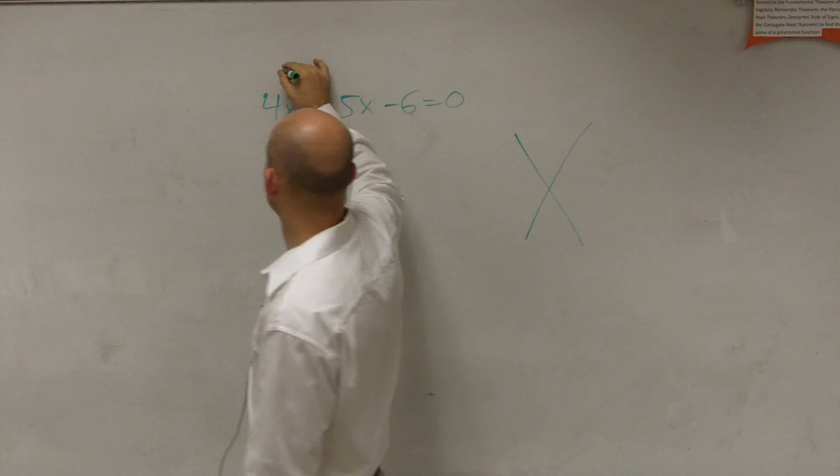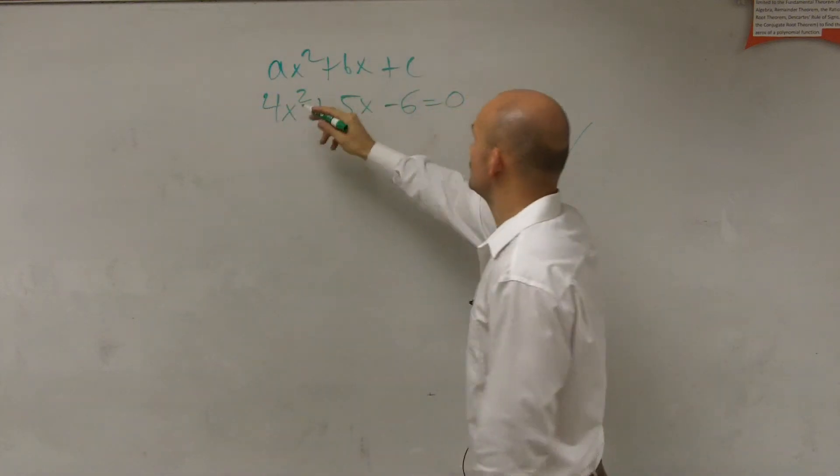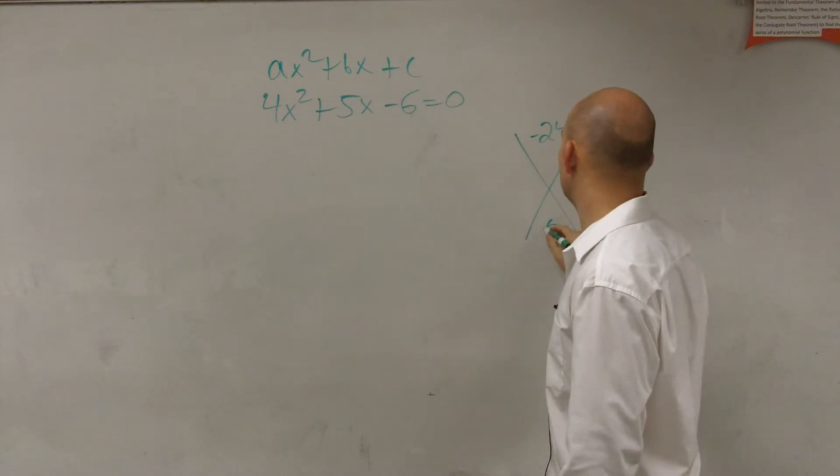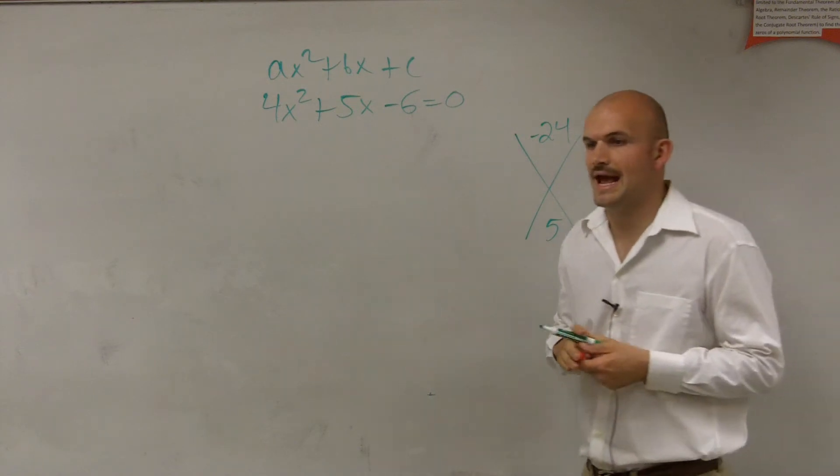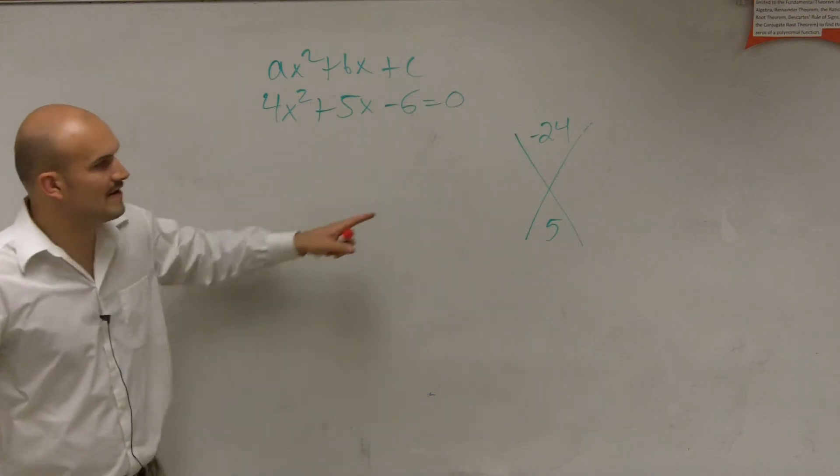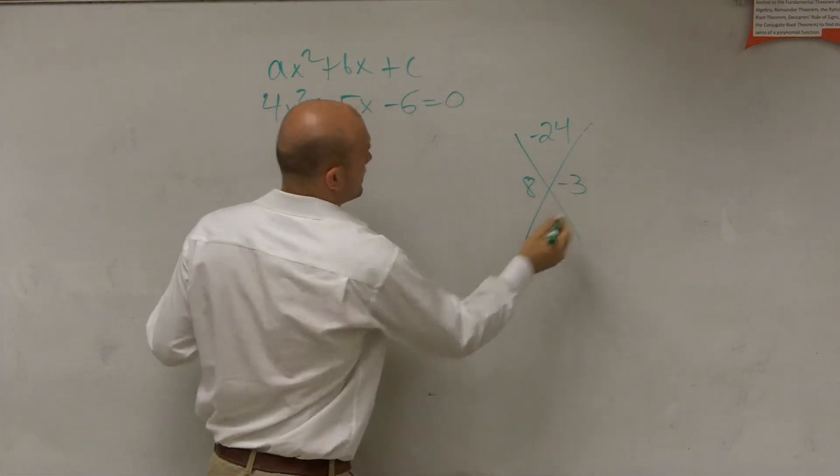So we know that this is a quadratic: ax squared plus bx plus c. a times c, 4 times negative 6, is negative 24. b is 5. What two numbers multiply to give me negative 24, but add up to give me 5? Well, so we take a look at all the factors in negative 24. And you could say 8 and negative 3, right?